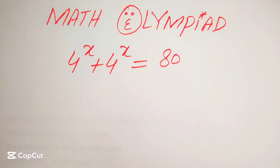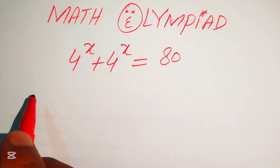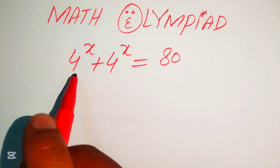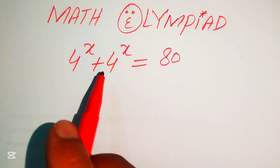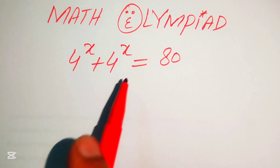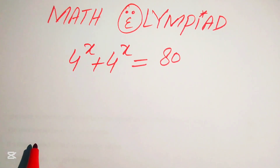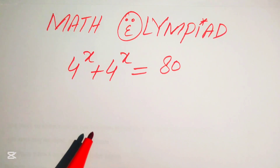Hello everyone, welcome to solve this nice math algebra problem. Here we have 4 to the power of x plus 4 to the power of x equals to 80, and we solve this problem for the values of x.